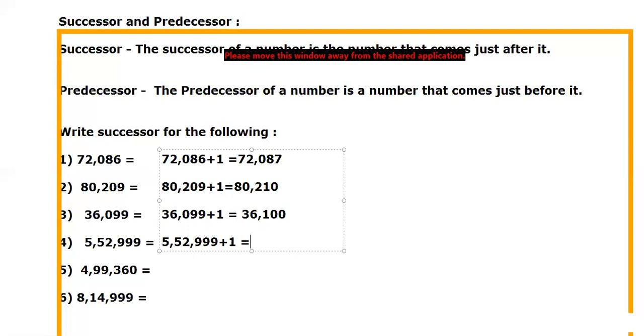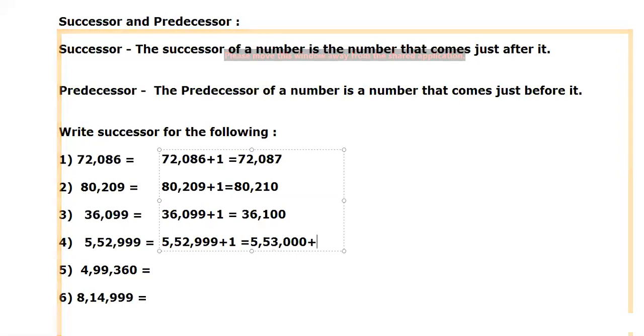See, here also 999 is there. 5,52,999, what will come? 5,53,000. This is the only change you have to remember here.